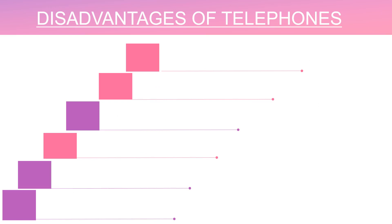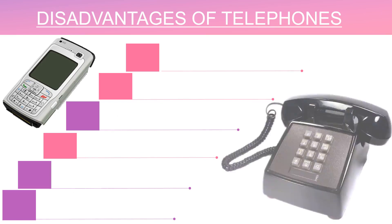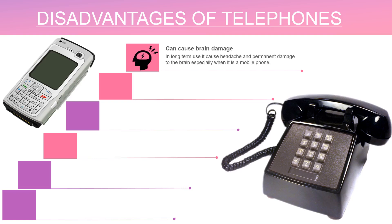Now we're coming to disadvantages — for both cell phones and landlines. Number one: excessive phone use can cause very serious brain damage and severe headaches if used for a long time without a break. There are people who are constantly on the phone, and those rays — especially from cell phones — can cause severe headaches and you can end up having brain damage.